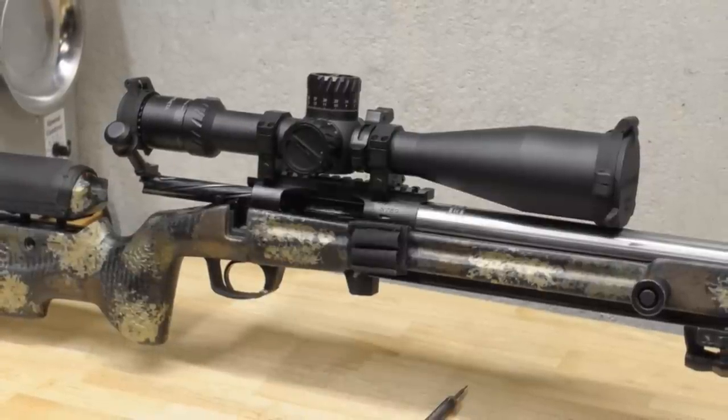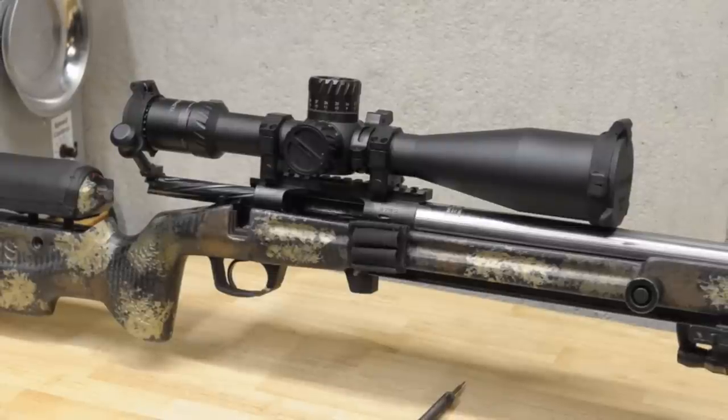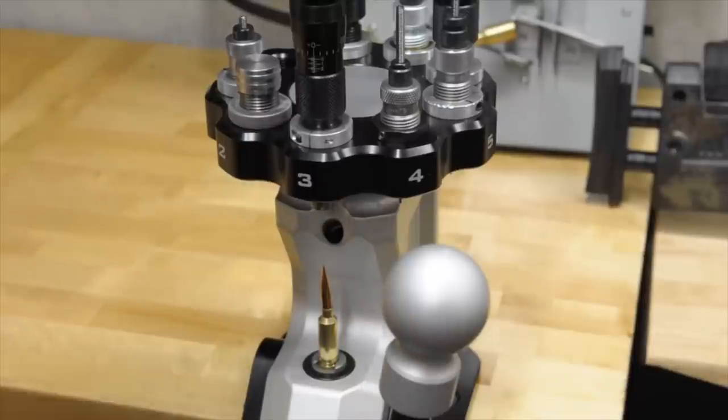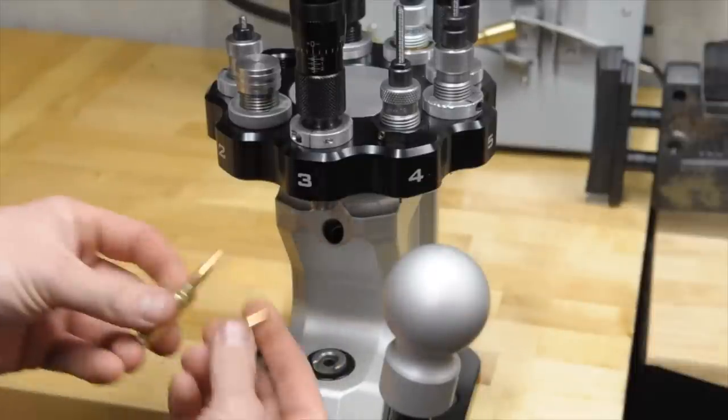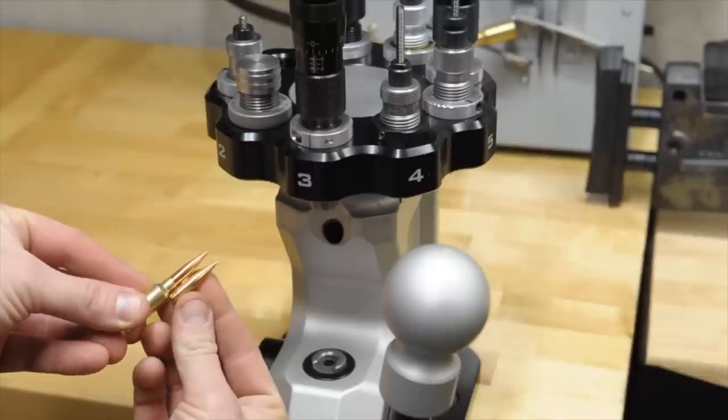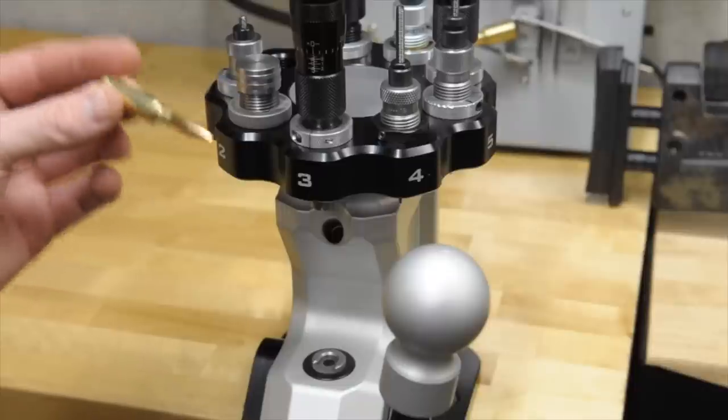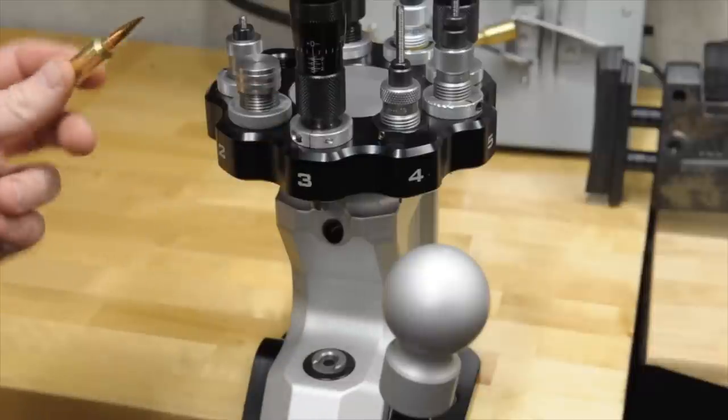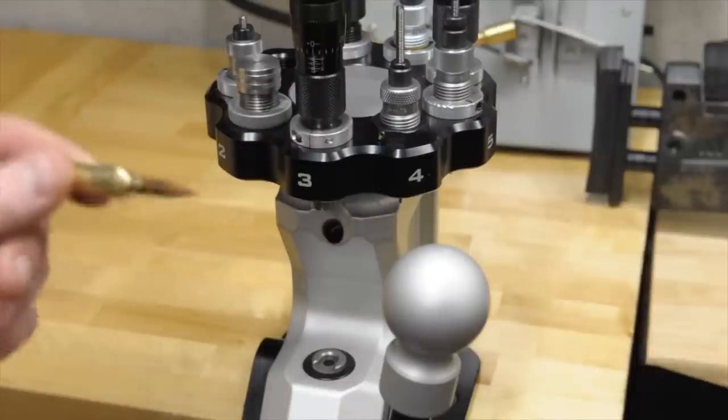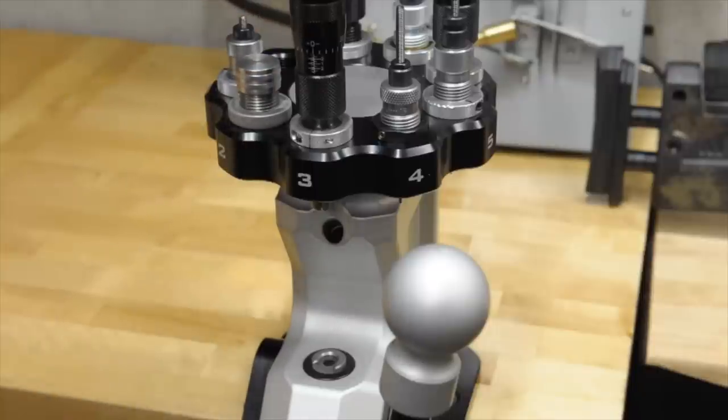They also have ones that go in your press. I think it's a collet bullet puller. I don't have one. I've just bought the hammer when I started, and for what I've done, it's worked for me, so I haven't experimented with anything else. So back over on the press, I got my die spun back just so we can see where we're at as far as our seating depth goes. You can obviously tell that is super long and barely seated in the neck of the case, but that's just for testing purposes. We're going to throw it in the chamber and see where we're at.